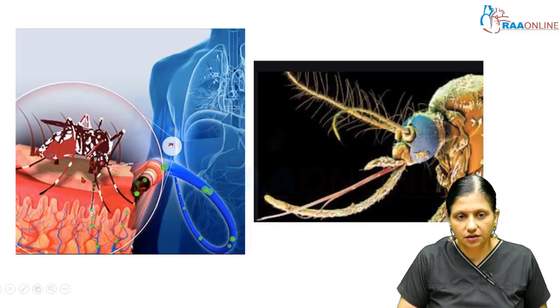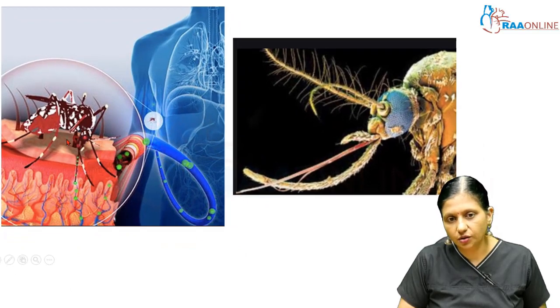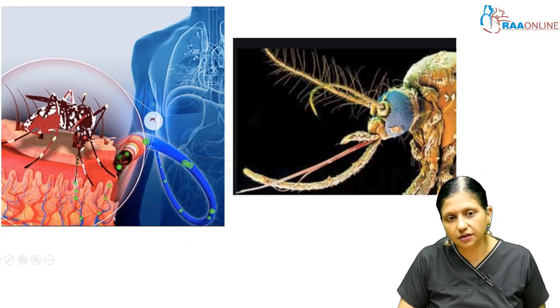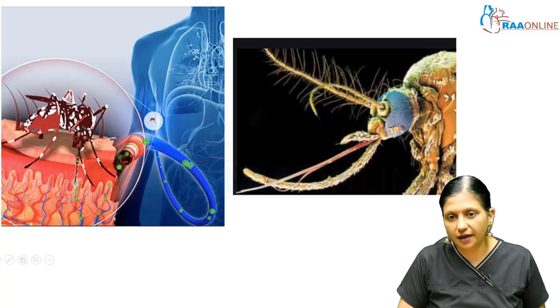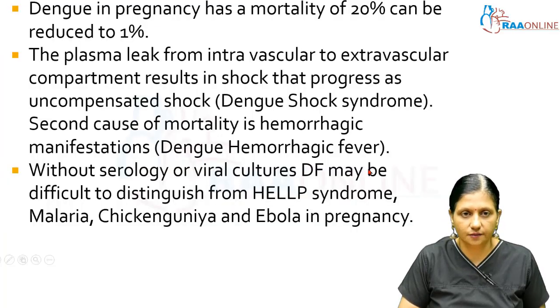This is the Aedes aegypti mosquito infecting human blood, shown here with the salivary glands and the proboscis of the Aedes aegypti mosquito.